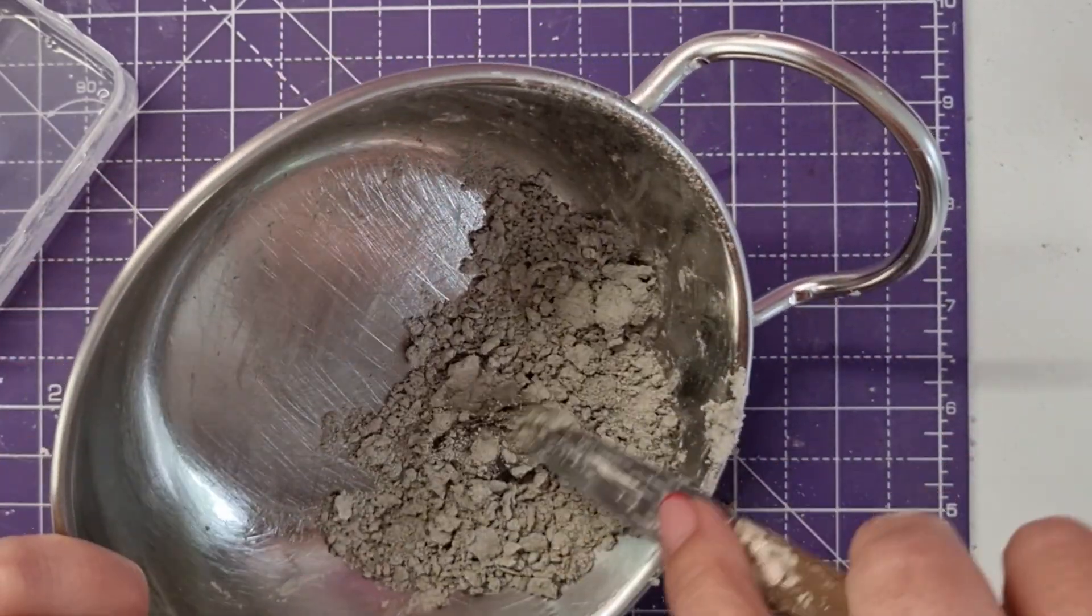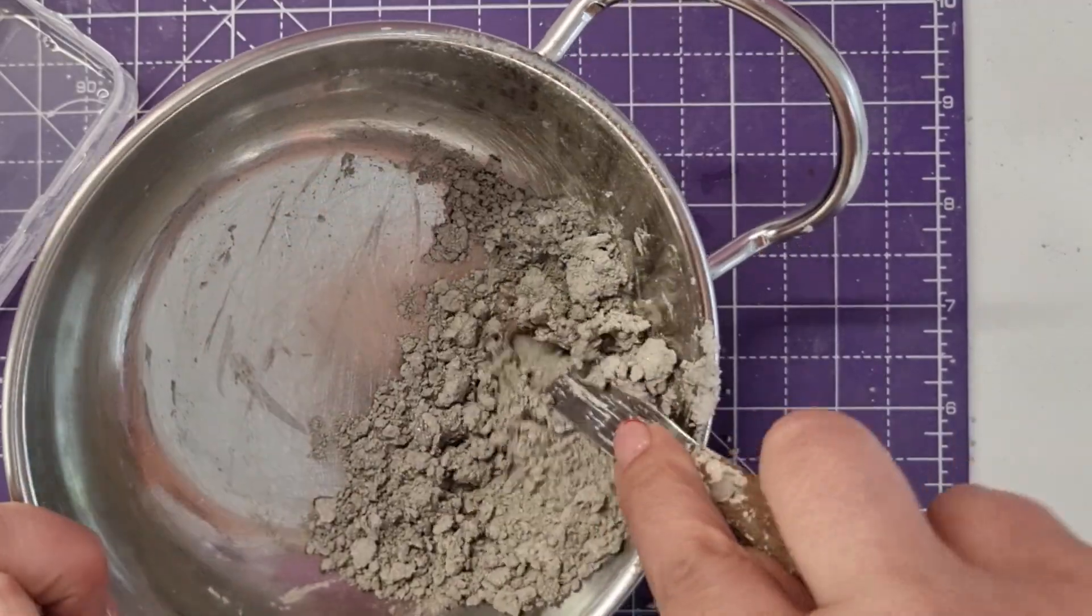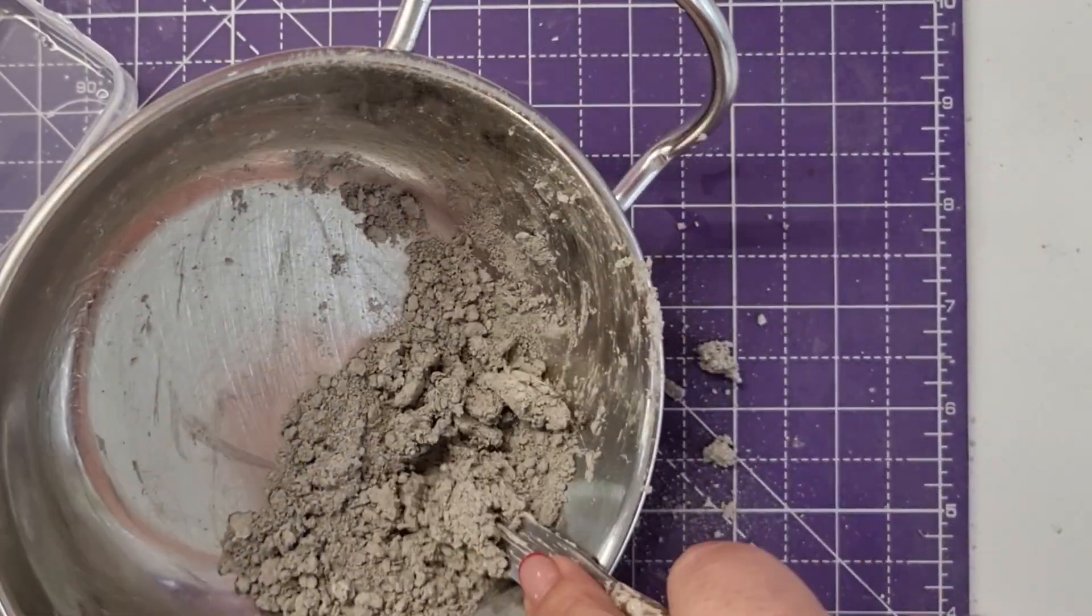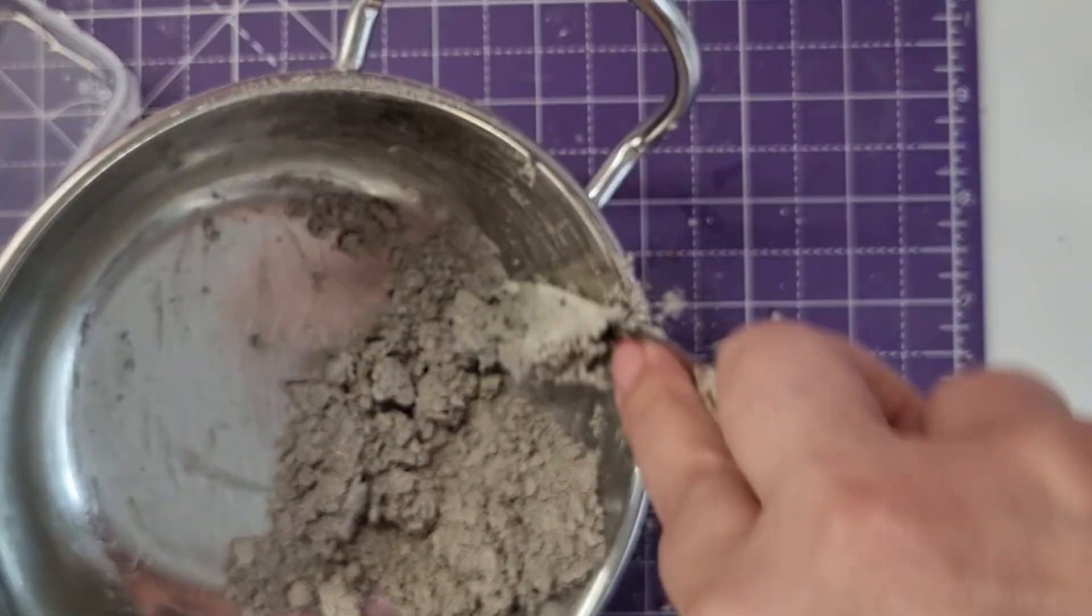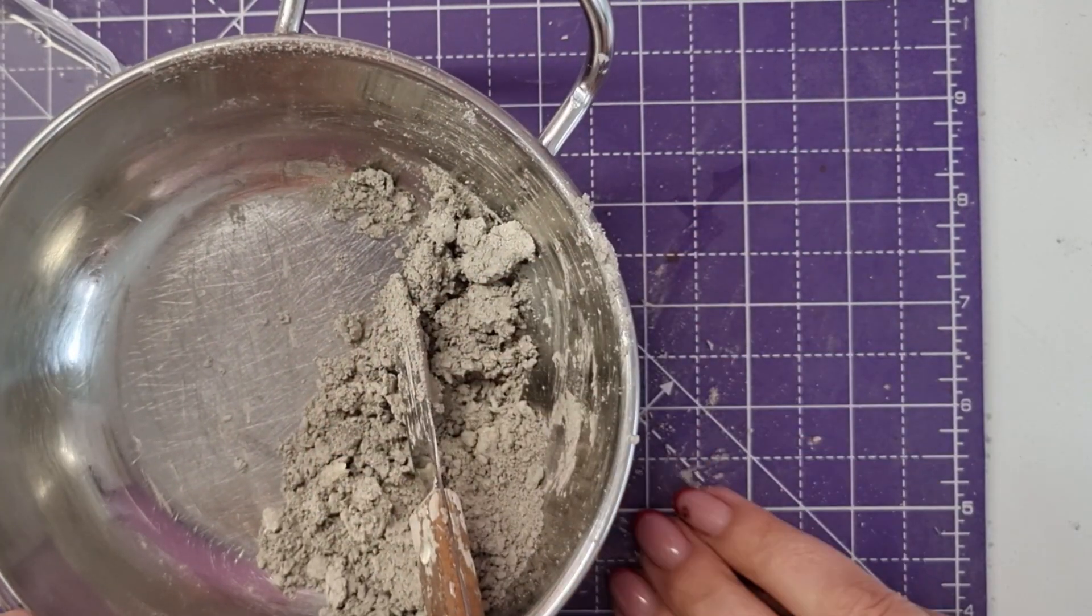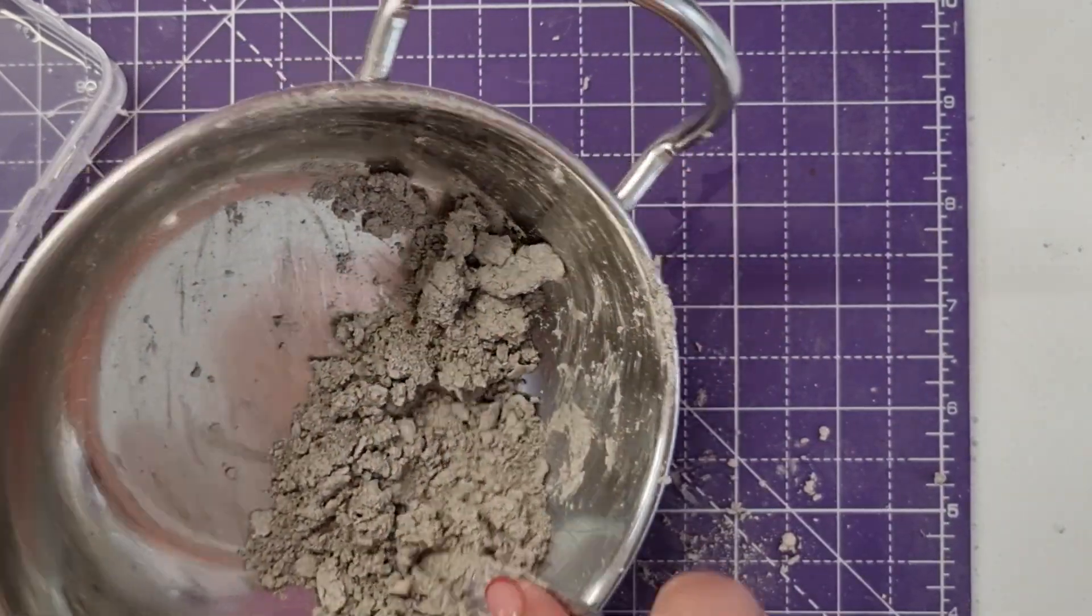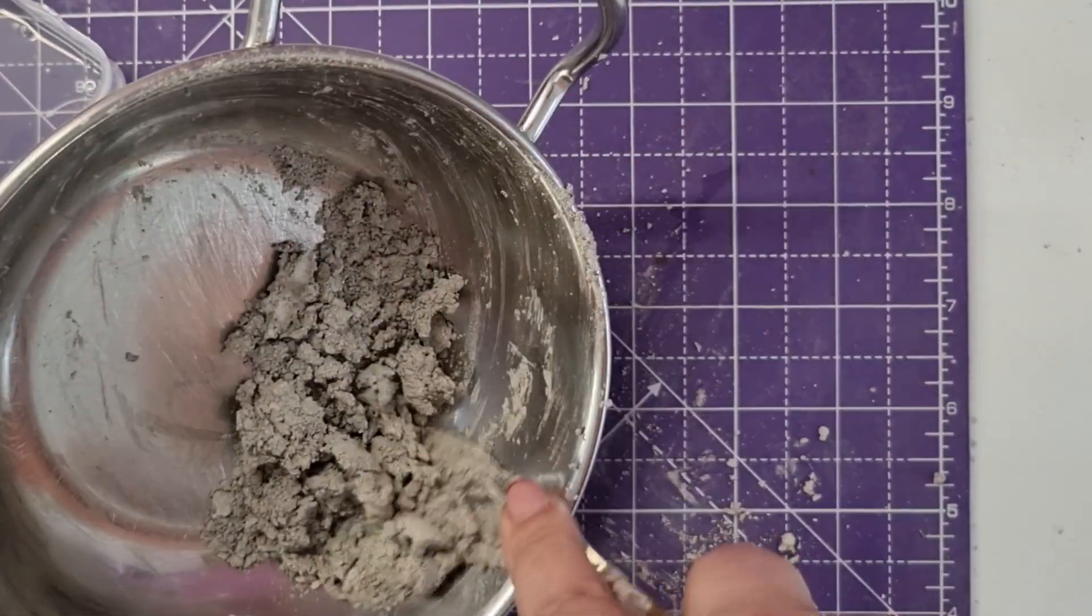This second half teaspoon will really start to bring this together. We've got to work it through and be firm and start to bring it through. Pretty soon once it's starting to clump, I'll bring it together with my fingers and my hands to start to make it into one cohesive ball of clay.